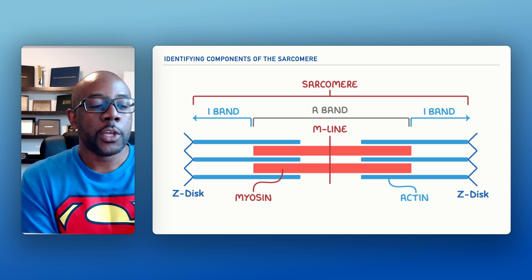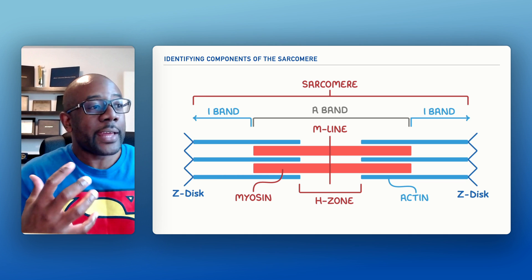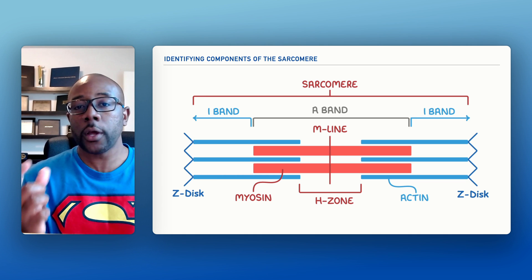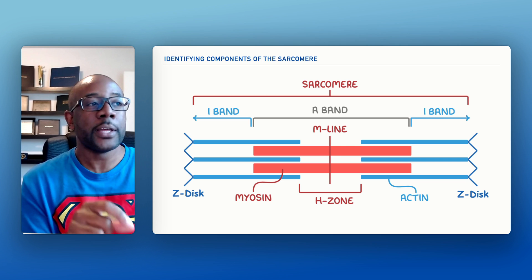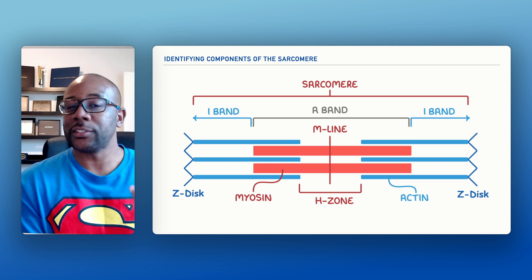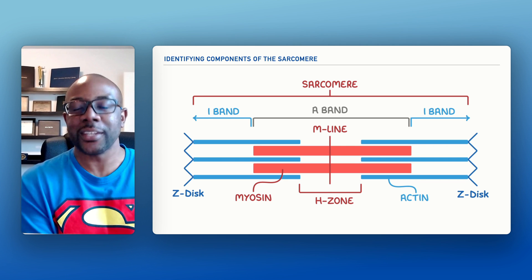And last but not least, we'll make note of something called the H-zone. And the H-zone is the component of the sarcomere that only highlights the portion of the myosin filament. Well, that's it for this video. I hope it was helpful, and I look forward to seeing you in the next one.